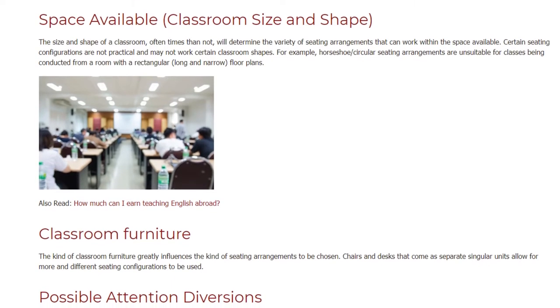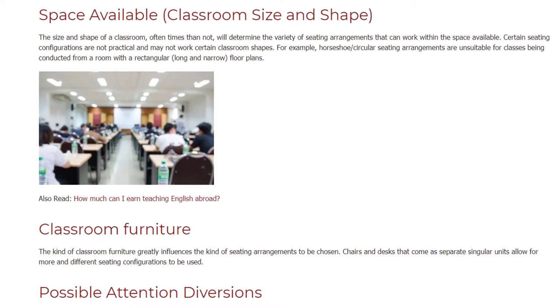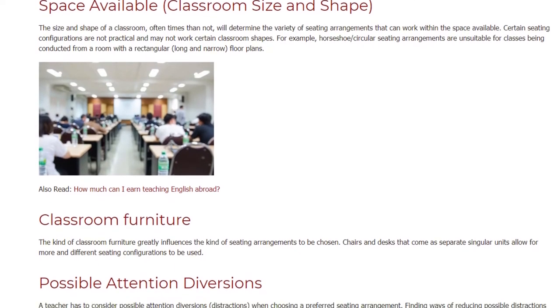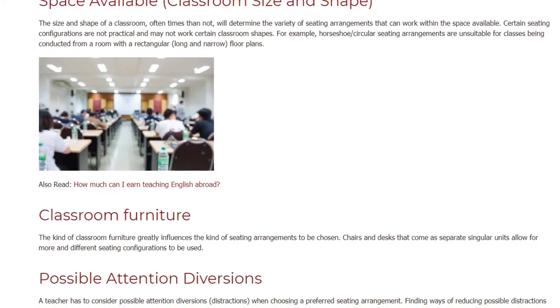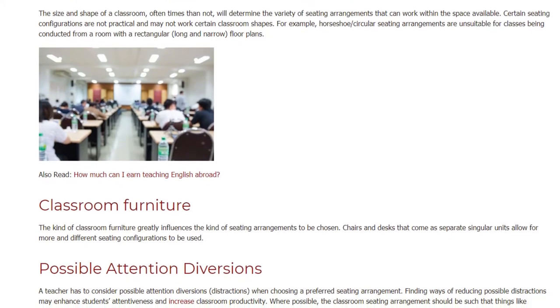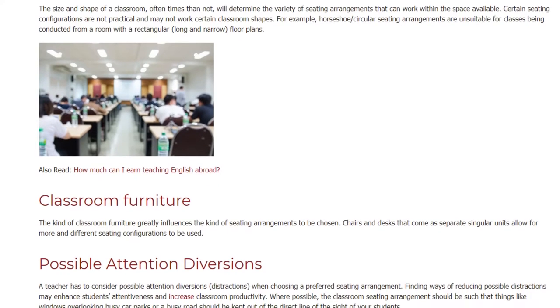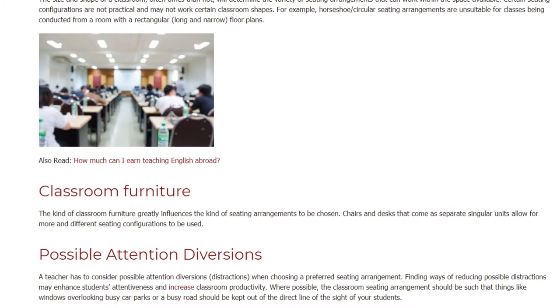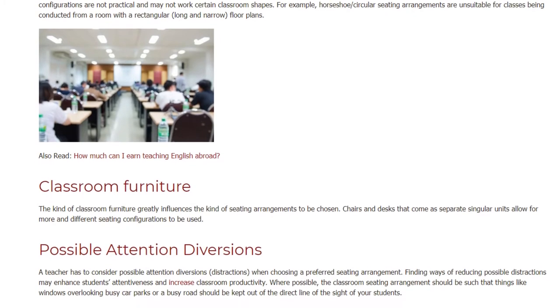Classroom furniture: the kind of classroom furniture greatly influences the seating arrangements to be chosen. Chairs and desks that come as separate singular units allow for more and different seating configurations to be used.